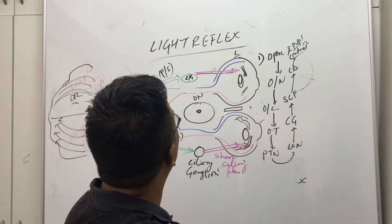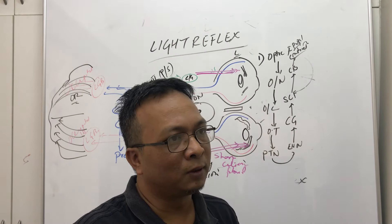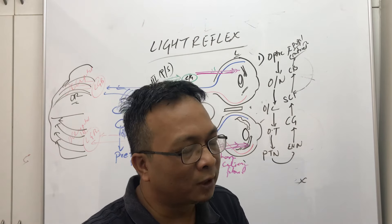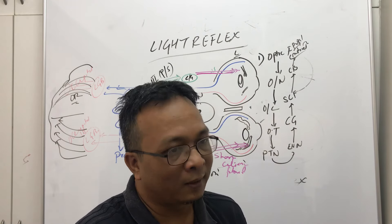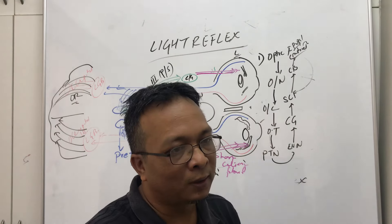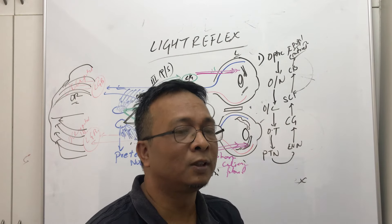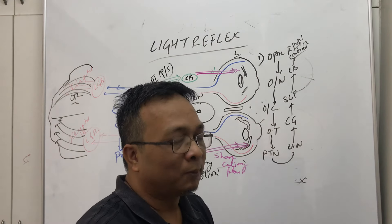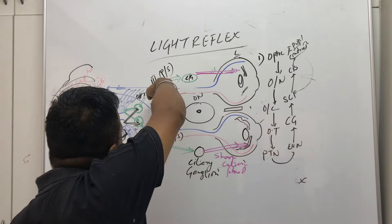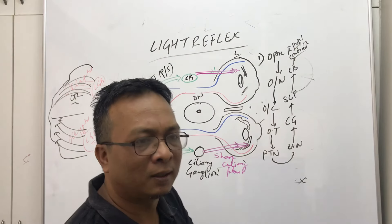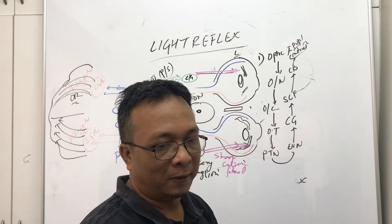It is very important to assess light reflex in every unconscious patient. Sometimes patients exhibit functional behavior — due to psychological problems they pretend to be unconscious, often before exams when they are not prepared. They come to the casualty appearing unconscious, everyone panics. You just take a torch, put light on the eye — if pupils are reacting, you send them back; nothing is serious. That is why the light reflex is so important.